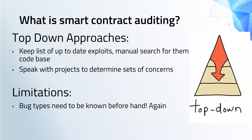Another type of auditing approach — the next one up — is top-down approaches. They require more skill than automated approaches. Basically, auditors have a list of known exploits they are concerned about, and they need to be trained in identifying them in the different ways they might appear across protocols. Like automated tooling, they suffer from a major drawback: they are primarily reactive in the sense that the bug types need to be known beforehand.